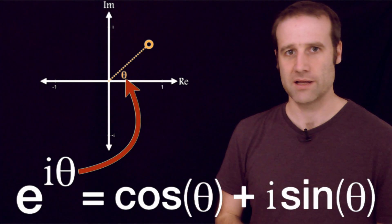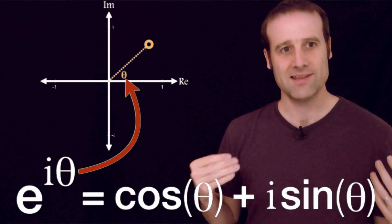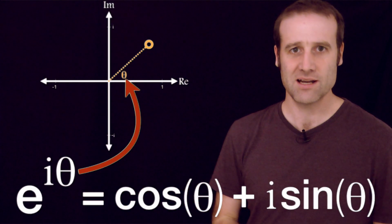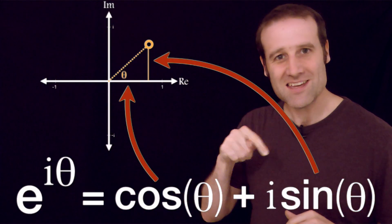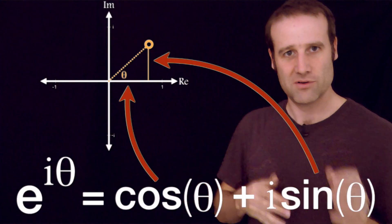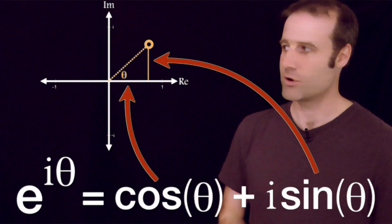And then underneath here, the cos theta plus i sine theta, that's just the Cartesian coordinates. So I like this because it's converting between the polar and the Cartesian versions of complex numbers.